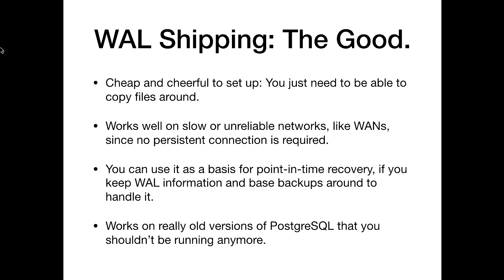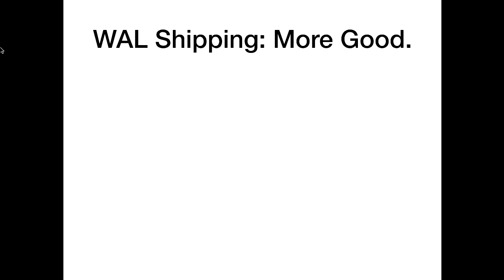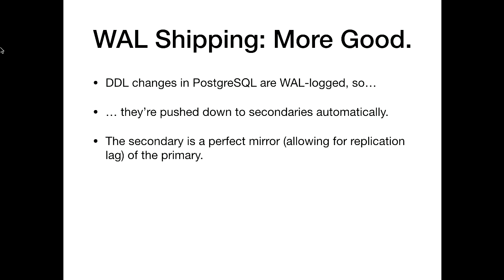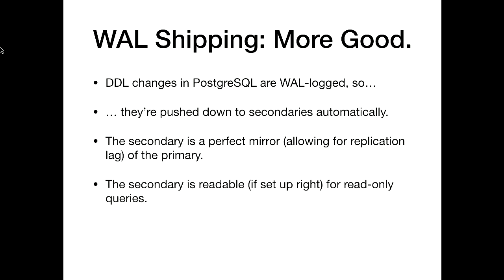If you're running a version before 9.0, it's your only option for binary replication. One of the nice things about Postgres — a great feature people just accept but don't fully understand how cool it is — is DDL changes are WAL-logged. When you do a CREATE TABLE, that's WAL-logged like everything else. It's transactional; it can be rolled back. So when you're using WAL shipping and you do a schema change on the primary, those changes are pushed down to the secondary automatically. You don't have to do anything special to keep the schemas in sync. Allowing for replication lag, the secondary is a perfect mirror.